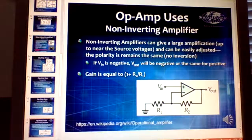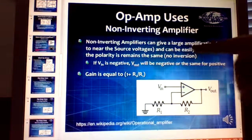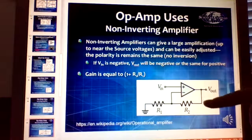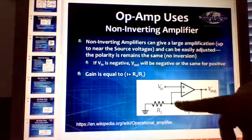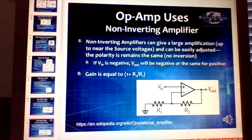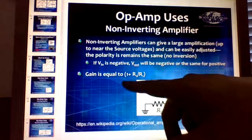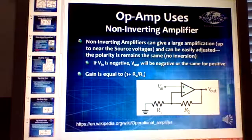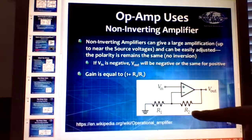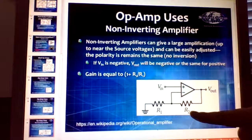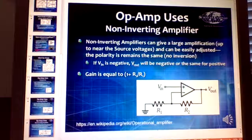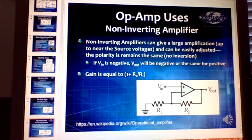The second most common is the non-inverting amplifier, which gives large amplification up near the supply voltages. V-in goes into the non-inverting input and the feedback is on the other side with R1 and R2. The gain equals one plus R2 divided by R1 — so with a one-megaohm and a one-ohm resistor you get a gain of one million and one. This one is positive, while the inverting amplifier gives a negative gain.